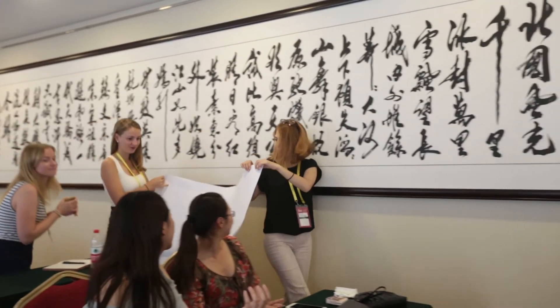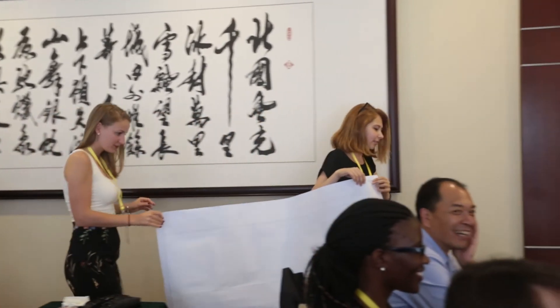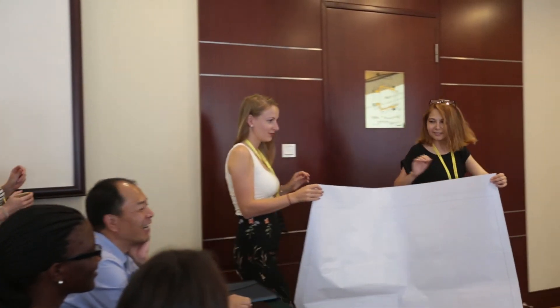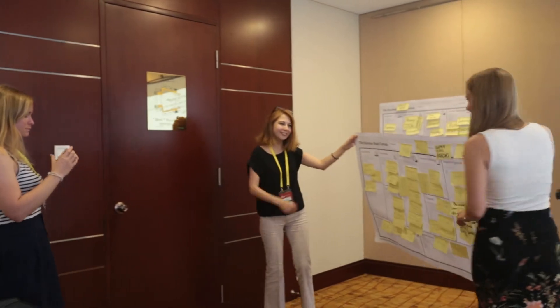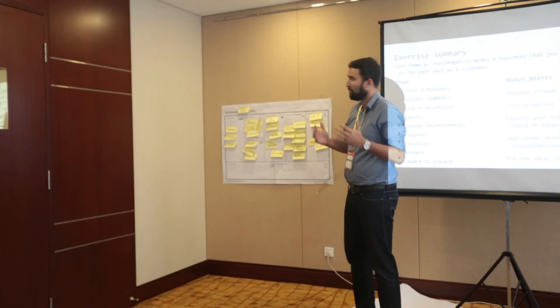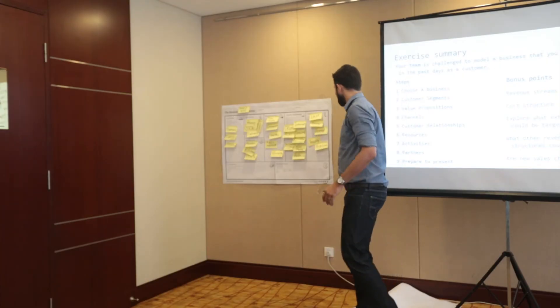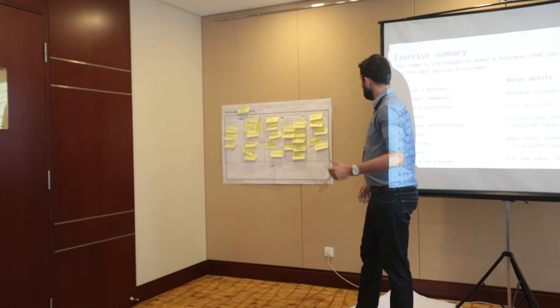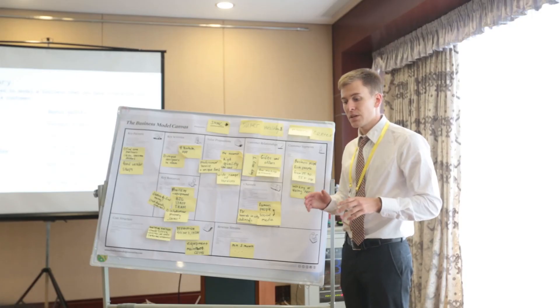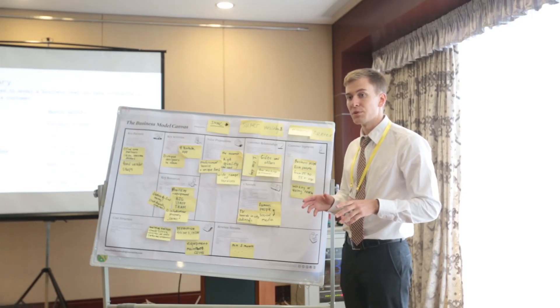Next, they considered how the business delivers that to the customer — the sales channels, the marketing channels, any follow-up and service given, and the relationship between the company and the customers themselves. After that, they had to dig into the activities of the business — how they run it day-to-day — key resources such as buildings or vehicles, and finally the partners that the business relies on to deliver their product.